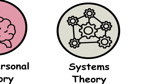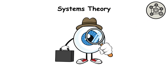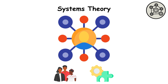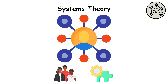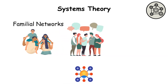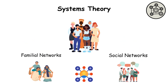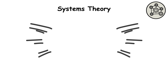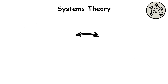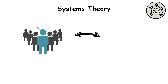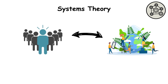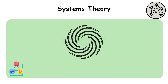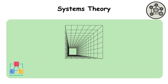The systems theory. Systems theory views individuals as integral components of larger interconnected systems, ranging from familial and social networks to cultural and environmental contexts. By emphasizing the dynamic interplay between individuals and their broader ecological milieus, this framework offers a holistic perspective on human behavior, underscoring the reciprocal influences between individuals and their environments in shaping psychological processes and outcomes.